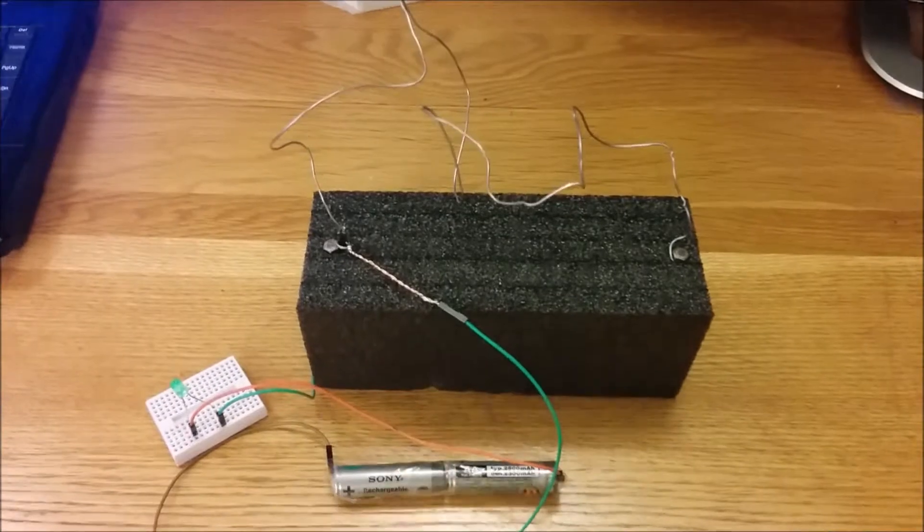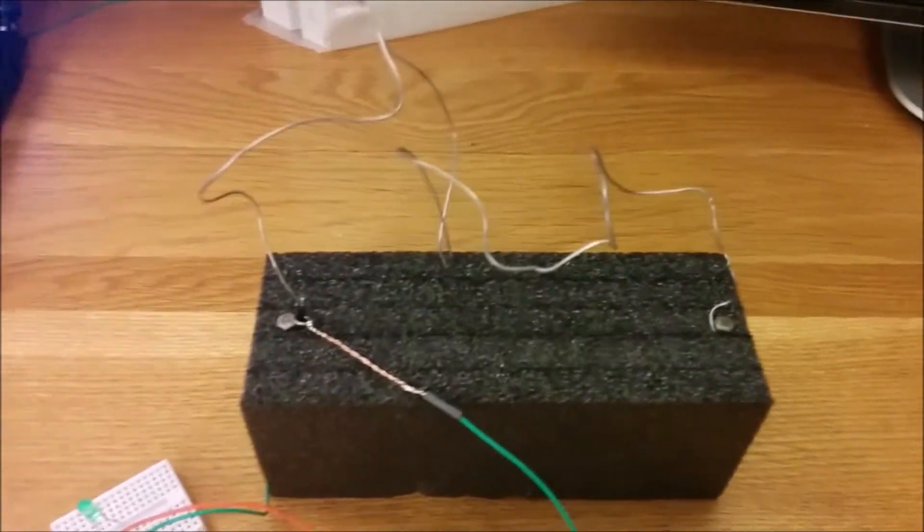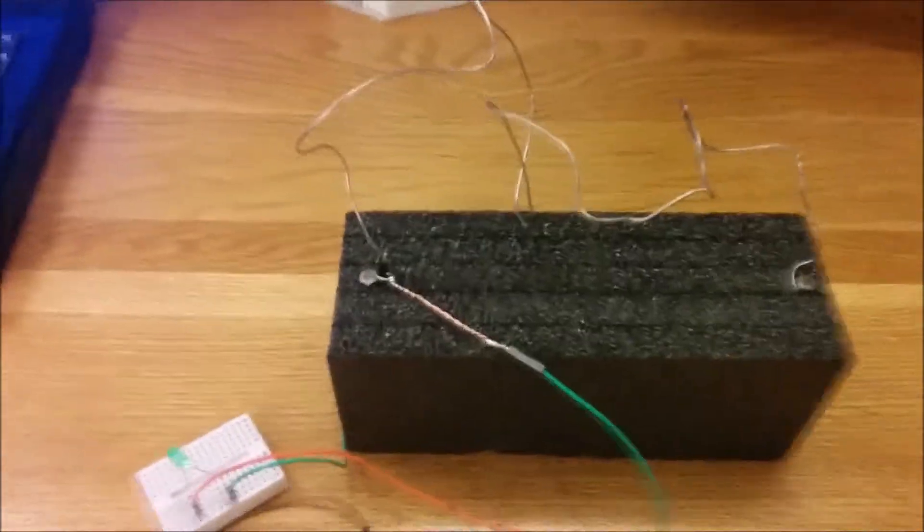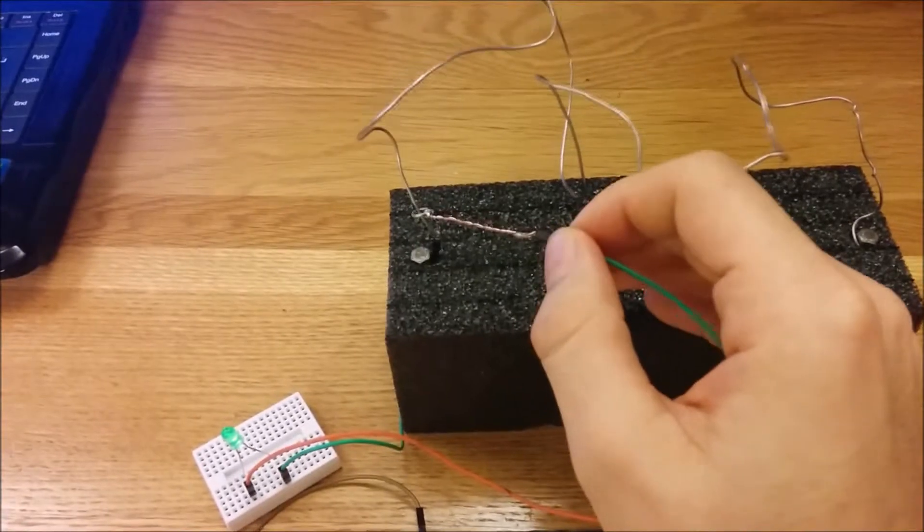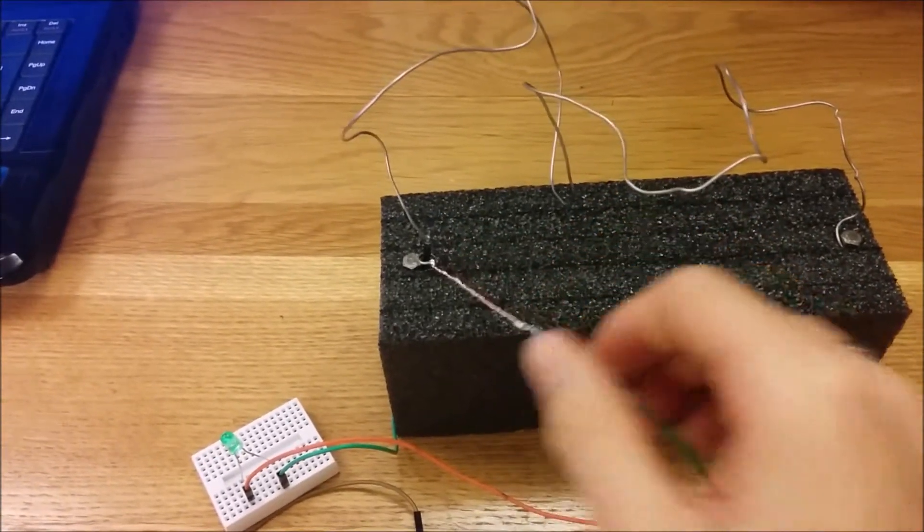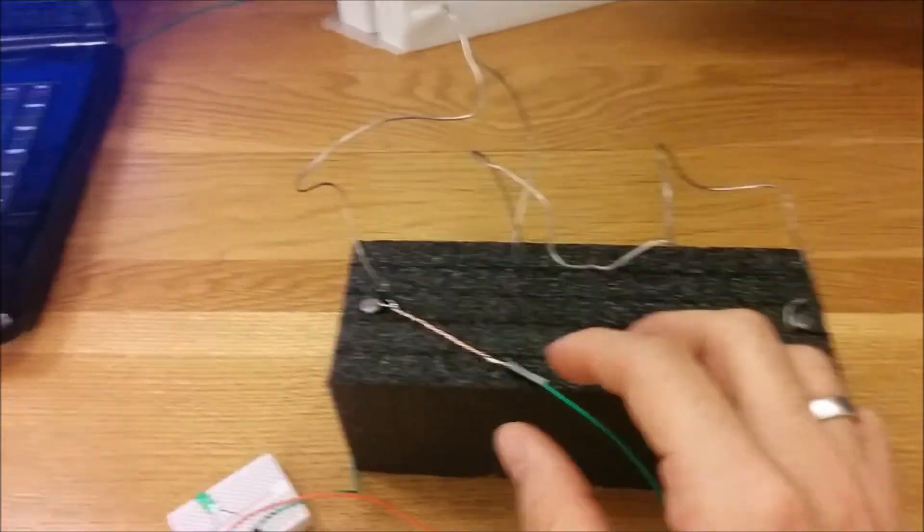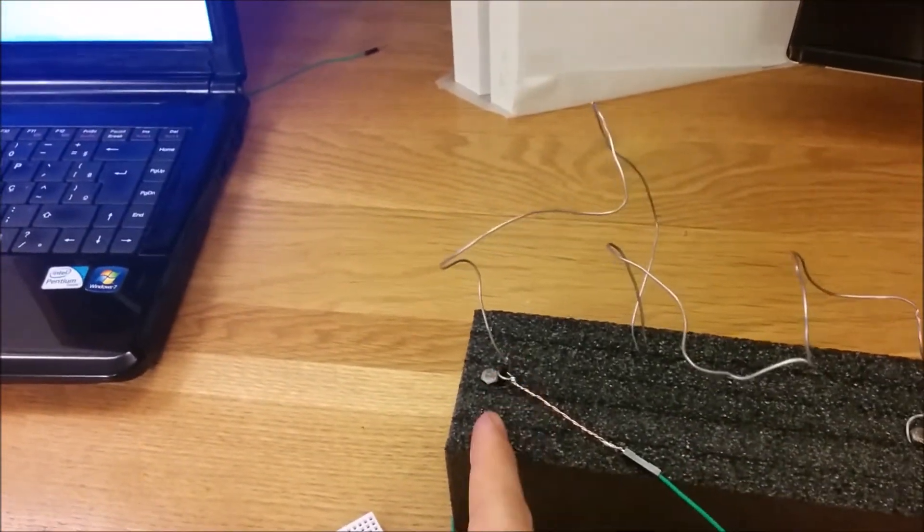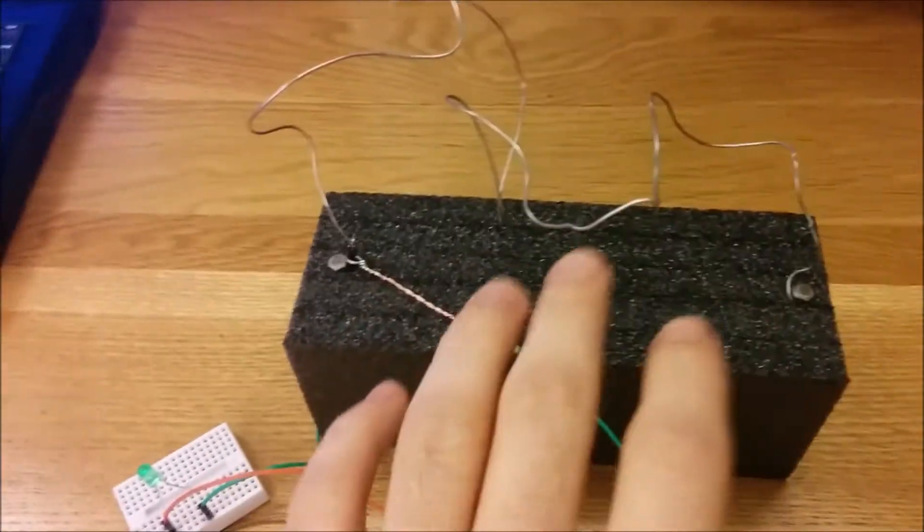The final work is this. This game, you must go on the cable to another side without touching the ring on any cable. If you touch the cable, the lights turn on and you lose. So the challenge of this game is you go from one side to another without touching any cable with the ring.